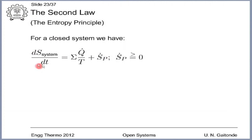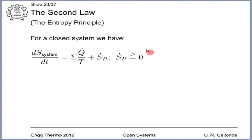This is the equation — on the right hand side is the definition of S dot P. The second law actually dictates that S dot P is greater than or equal to 0.